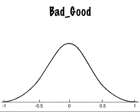Bad Good runs from minus one, meaning really, really bad, to plus one, meaning really, really good. An average person has a Bad Good value of zero. As you might expect, most people are somewhere in the middle of the bell curve, and only a very few people are at the extremes.